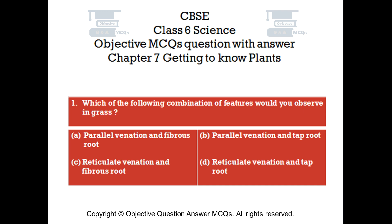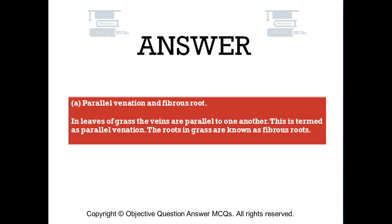The right answer is Option A: Parallel venation and fibrous root. In leaves of grass, the veins are parallel to one another — this is termed as parallel venation. The roots in grass are known as fibrous roots.